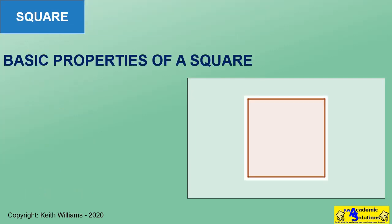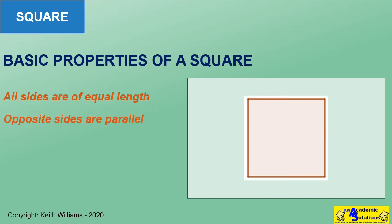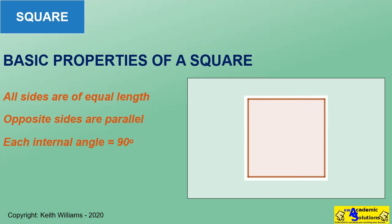All sides of a square are of equal length. Opposite sides of a square are parallel to each other. The internal angles of a square are each equal to 90 degrees.